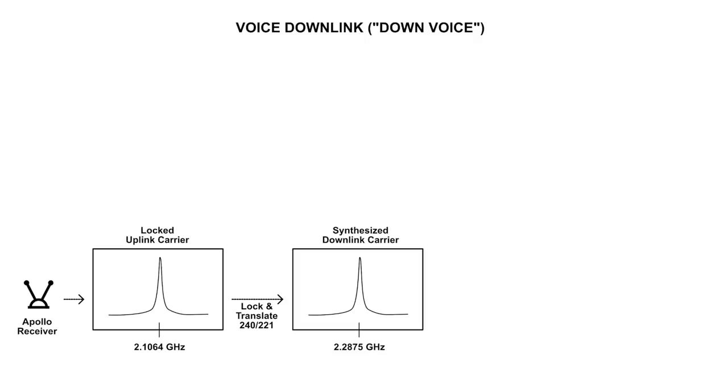So far, we have just completed our basic link. We received the uplink from the SDR at 2.1064 GHz. We then locked onto it, translated the frequency by a factor of 240 over 221. And that gave us the downlink carrier that we sent back to Earth, at 2.2875 GHz.